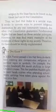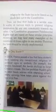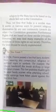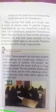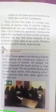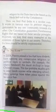Thus, we find India is a secular state. It works in various ways to prevent religious domination by any one community towards another. Secularism ensures that no one religion dominates the other. Our Constitution guarantees fundamental rights that are based on these secular principles. However, we may find many examples of violations of these rights in practice, and therefore the laws should be strictly implemented.